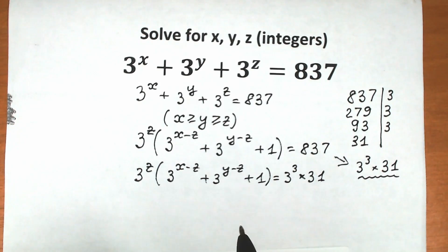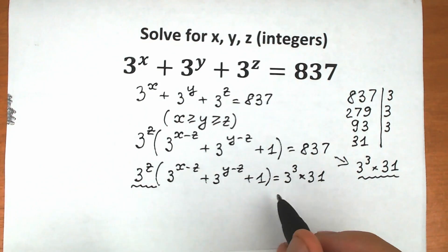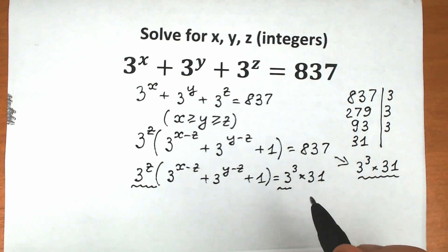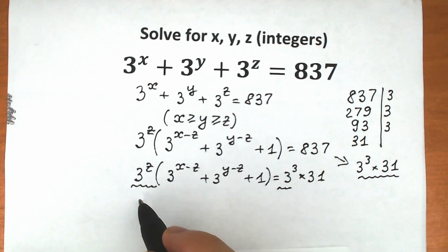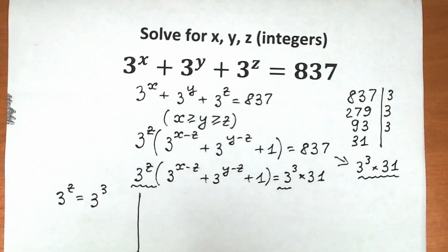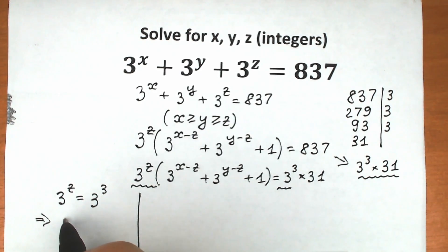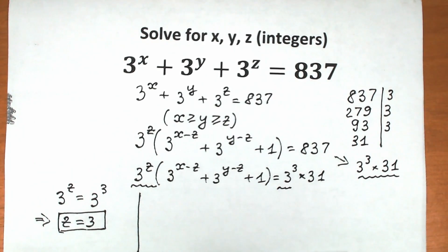If you look closely, we have 3 to the power z on the left and 3 to the power 3 on the right. The equation only has roots when 3 to the power z equals 3 cubed. So we set 3 to the power z equal to 3 cubed, and from here, z equals 3. This is our first solution.